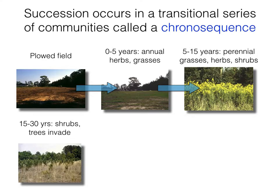At around 15 to 30 years, shrubs begin to invade along with small trees. On the East Coast at mid-latitudes, western red cedar is a very common tree species to establish between about 15 and 30 years after the field is allowed to return to its former forested condition. These western red cedar are bird-dispersed, and so birds perching on these cedars bring in seeds from other species and deposit them at the base of the trees — a process by which new seeds can be dispersed into these locations.